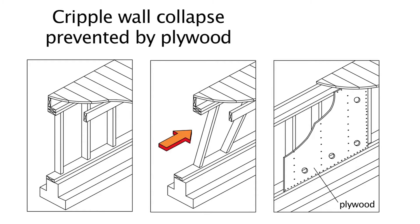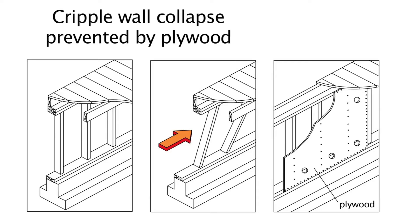The way this is repaired is by installing plywood on the cripple wall. These images illustrate why it is necessary to bolt a house to the foundation. The image on the far left shows a house where the cripple wall has been braced with plywood to keep it from collapsing. However, if we don't attach this to the foundation with bolts, the plywood, the cripple wall, and the house itself can still slide on the foundation and cause structural damage. We do this by installing bolts through what's called the mud sill, shown in pink on the upper left. We put bolts through that into the foundation so that the bottom of our cripple wall cannot slide on top of the foundation.